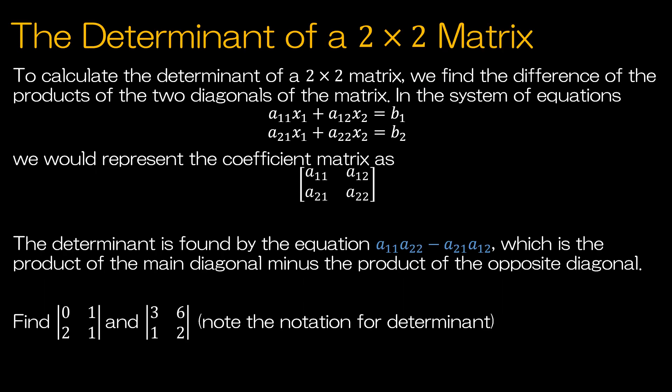We can use the determinant of a matrix by writing the coefficient matrix from our system of equations and finding the determinant by finding the product of the first diagonal and subtracting the product of the second diagonal. I want you to note what the notation looks like for determinants. If you see what looks like absolute value brackets, that means find the determinant.